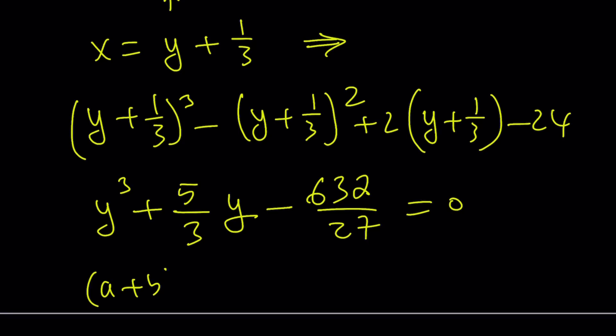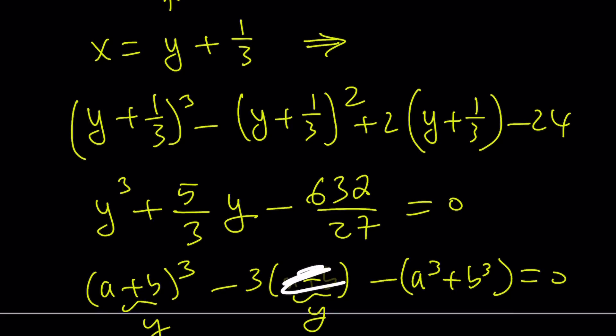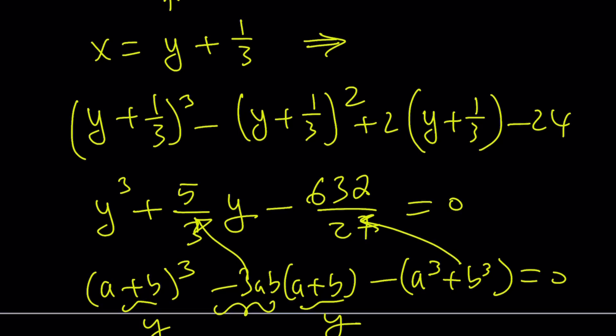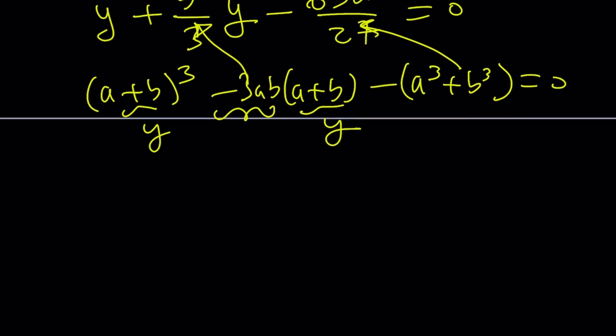I made a mistake in one of the videos, I realized, thank you for the comments. I'm going to redo that video. Anyways, that's just a disclaimer. This is a polynomial. y³ + 5/3y - 632/27 = 0. Come on, who wants to solve this cubic, even though it doesn't have a y squared term? The process is fairly painful. Hopefully, you know the idea. We can write this as (a + b)³ - 3ab(a + b) - (a³ + b³) = 0.